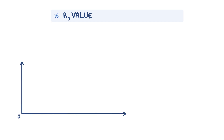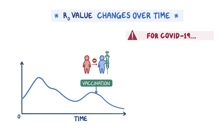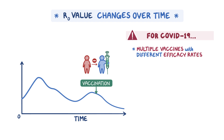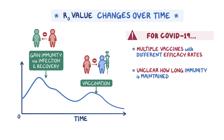R0 values within a region also change over time. As more people are vaccinated, transmission of the disease drops, which drops the R0 value. But for COVID-19, this too is complicated, as multiple vaccines are being administered and each has a different efficacy rate. Similarly, as people are infected with and recover from COVID-19, they gain immunity to the disease, which also decreases the R0 value. However, it's not clear exactly how long people maintain their immunity to COVID-19. Initial research has suggested immunity from COVID-19 infection may be six to eight months, depending on how severe a patient's symptoms were, and there have been cases of people being reinfected by the disease.